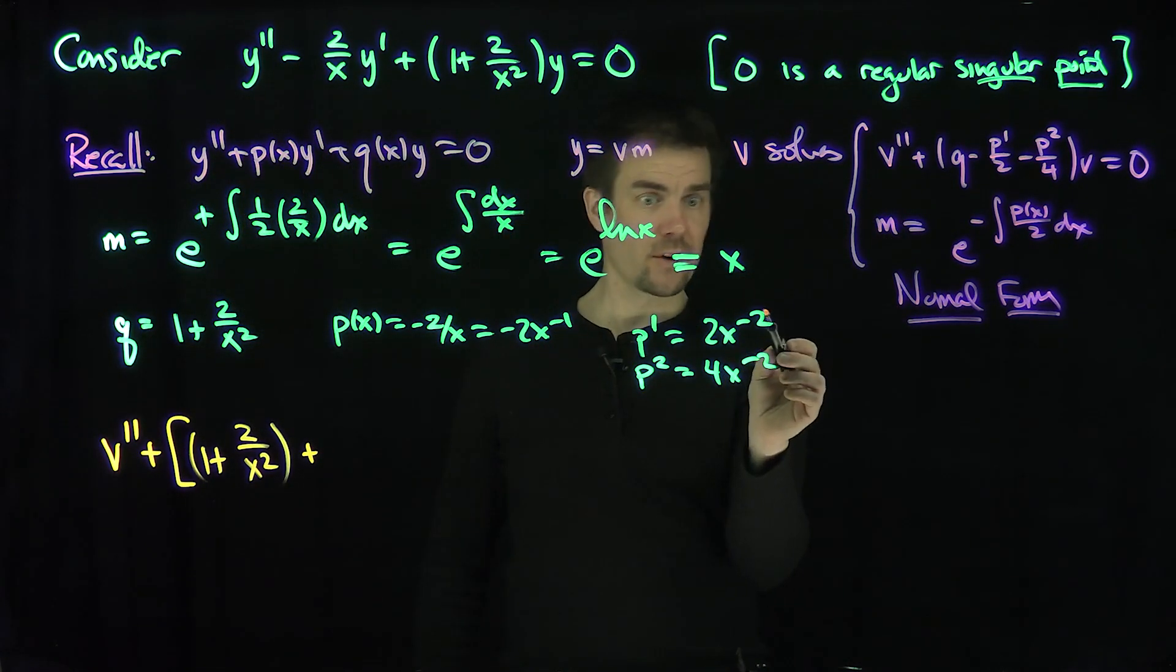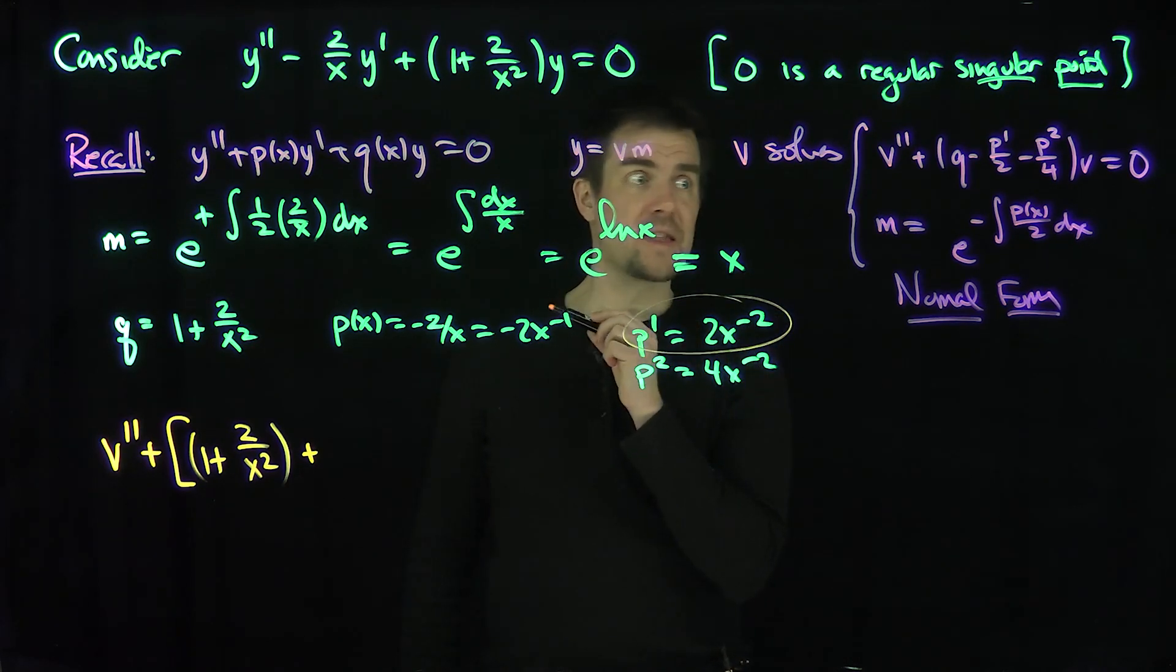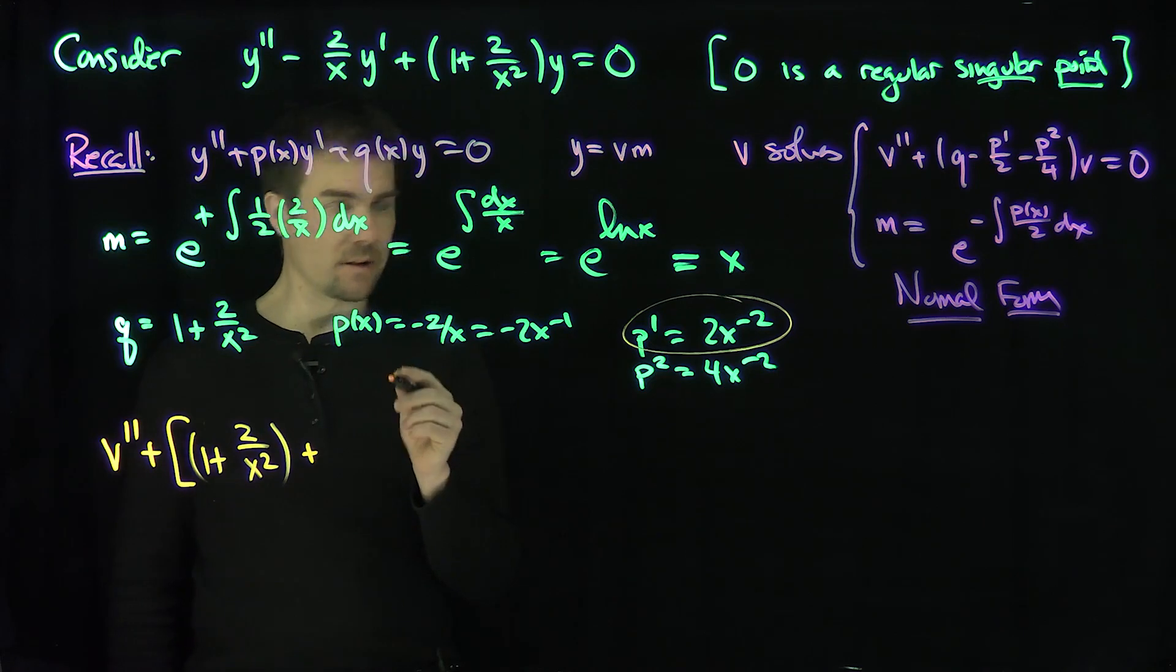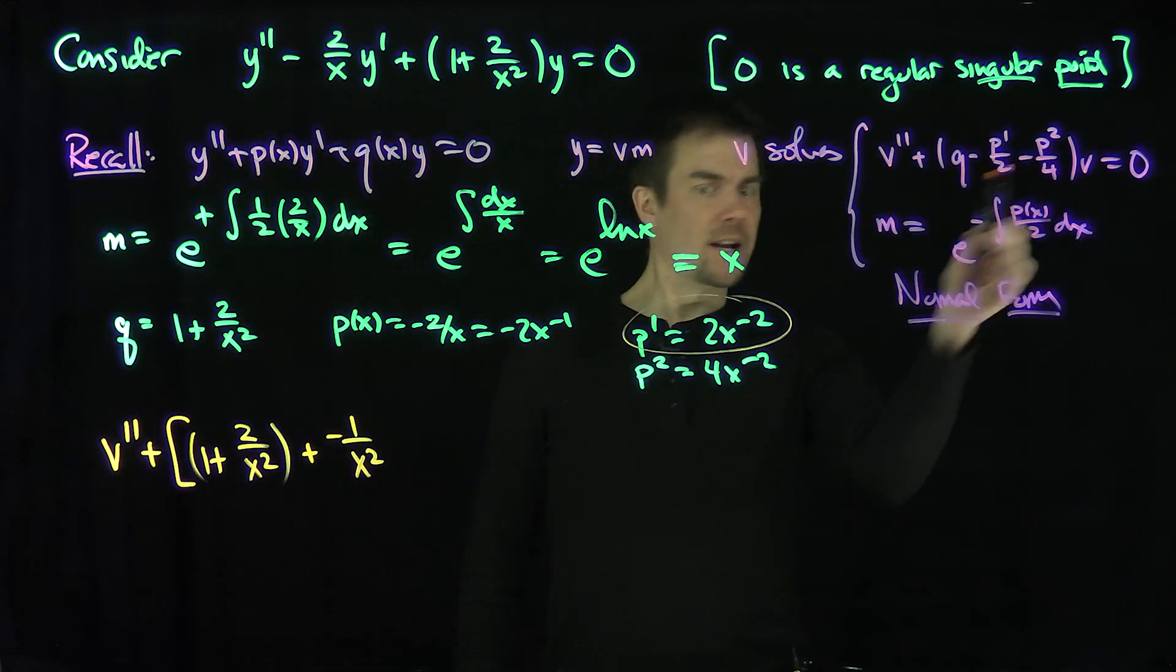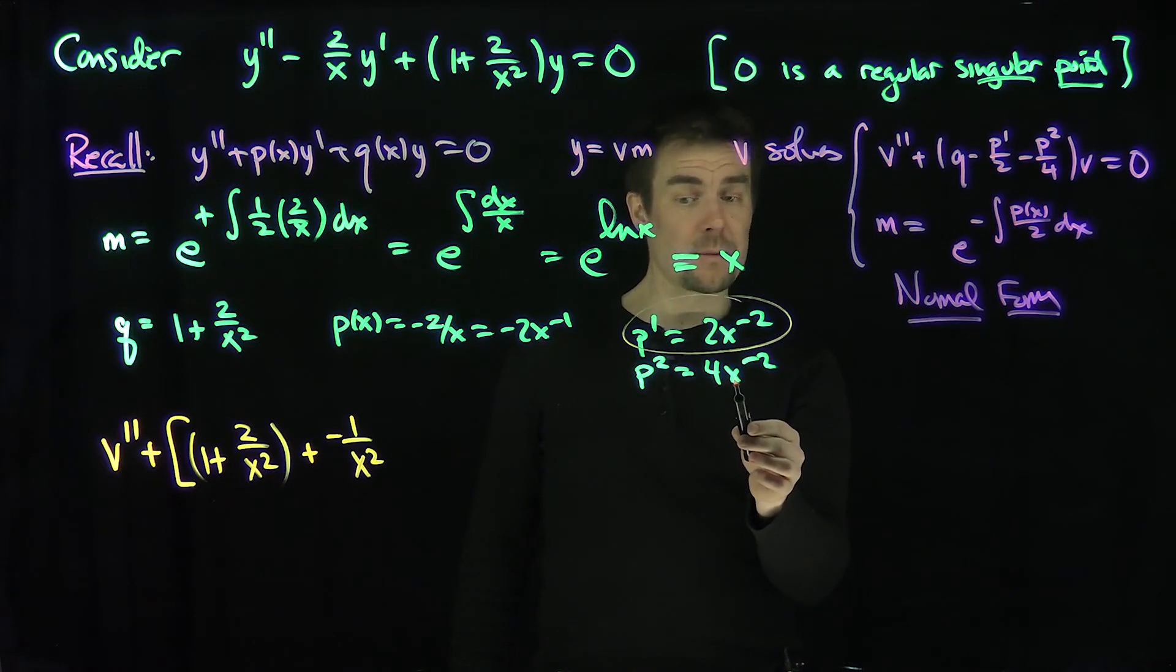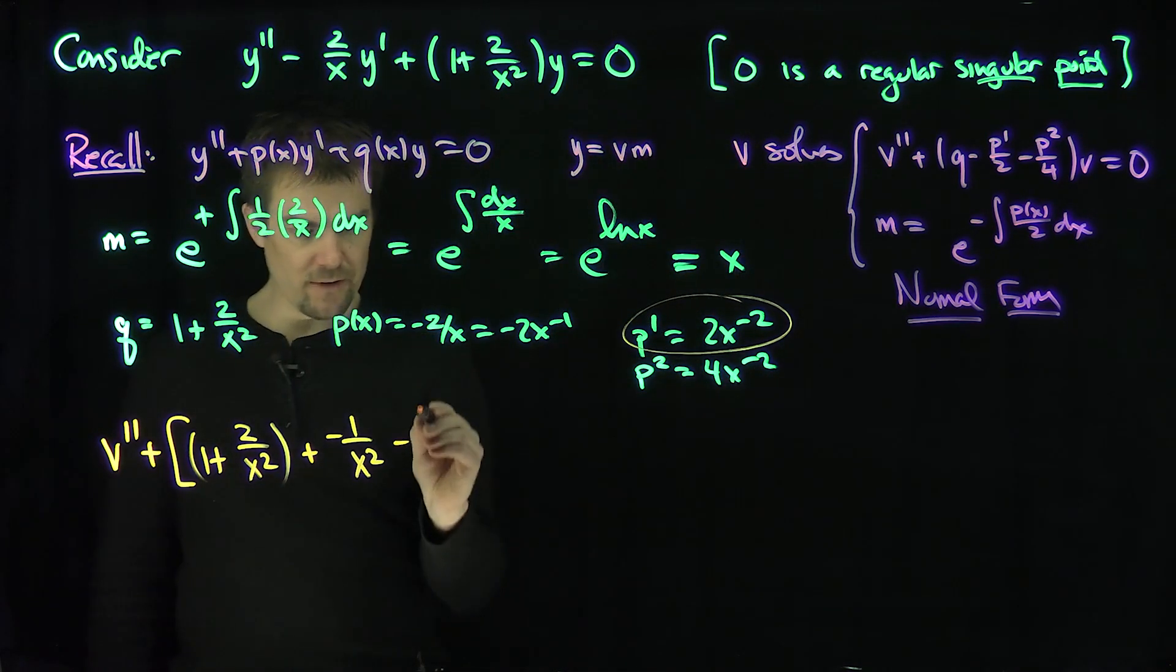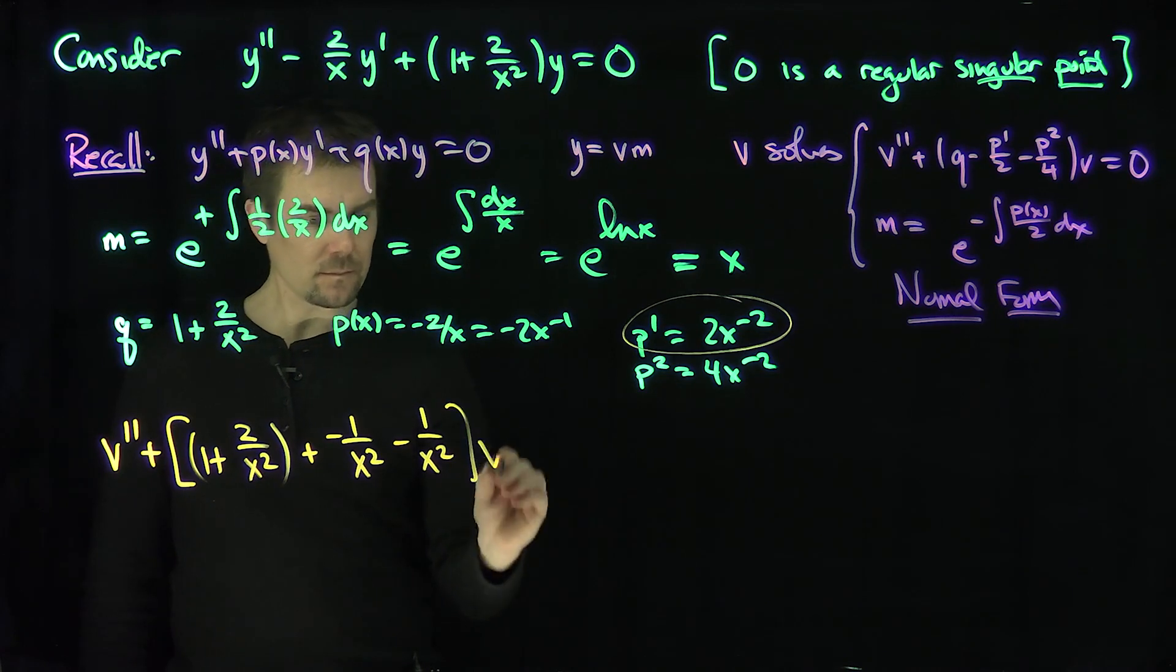So -p'/2: p' is 2x^(-2), so p'/2 is x^(-2) with a negative sign. And p²/4: that's 4x^(-2)/4 = x^(-2) with a negative sign. So -x^(-2) times v.